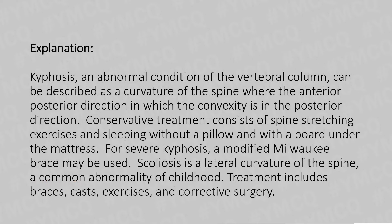The answer is Kyphosis. Kyphosis is an abnormal condition of the vertebral column described as a curvature of the spine where, in the anterior-posterior direction, the concavity is in the posterior direction. Conservative treatment consists of spine stretching exercises and sleeping without a pillow with a board under the mattress. A modified Milwaukee brace may be used. Scoliosis, by contrast, is a lateral curvature of the spine, a common abnormality of childhood; treatment includes braces, casts, exercises, and corrective surgery.